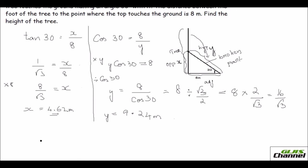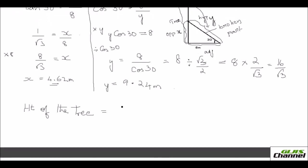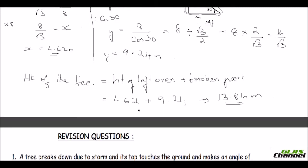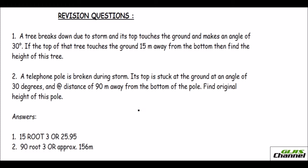The height of the tree is the leftover portion plus the broken part. So that would be 4.62 plus 9.24, which equals 13.86 meters. That is the height of the tree. These are most commonly asked questions during the examination. I have given you two revision questions — just work them out the same way.